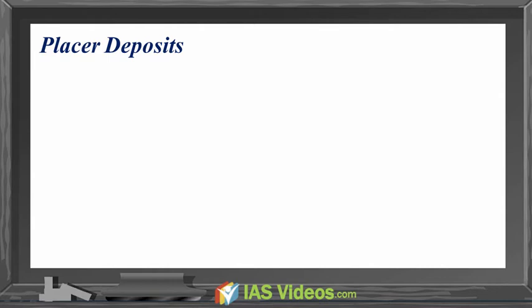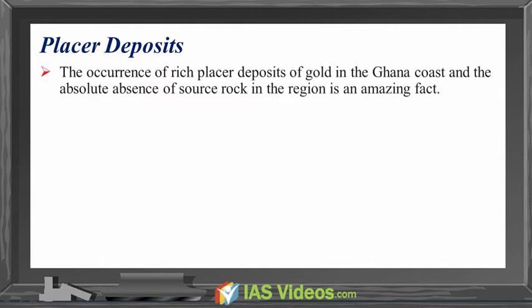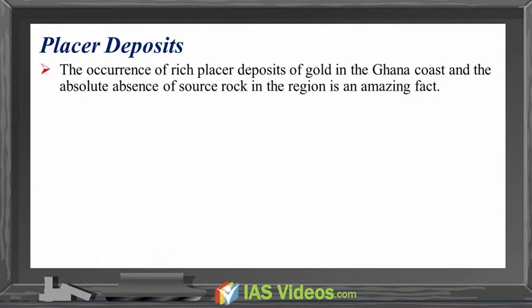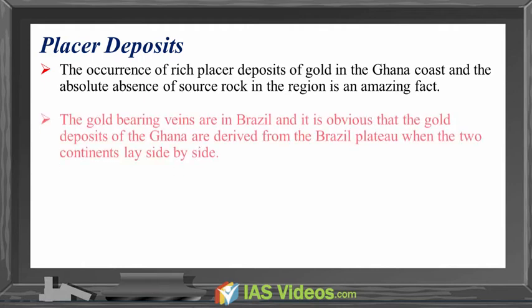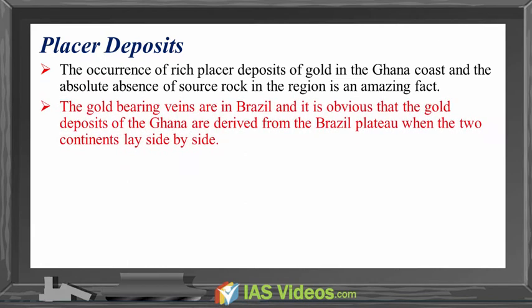Placer deposits. The occurrence of rich placer deposits of gold in the Ghana coast and the absolute absence of the source rock in the region is an amazing fact. The gold-bearing veins are in Brazil, and it is obvious that the gold deposits of Ghana are derived from the Brazil Plateau when the two continents lay side by side.